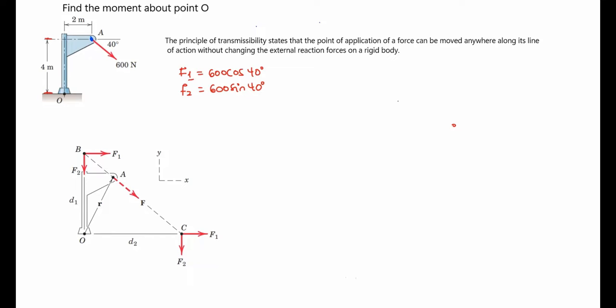Now let's solve it using point C as well. For point C, F1 is acting directly on point O, so it will not have any moment effect on point O. The only moment will be caused by F2. So I'm going to have the moment about point O — standing at point C — equal to F2 multiplied by D2.